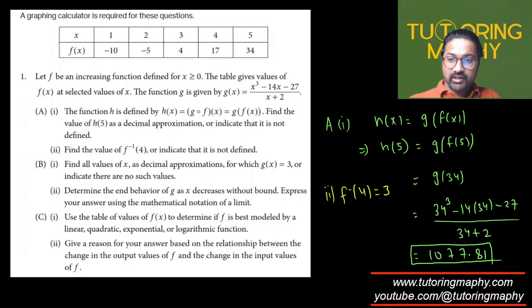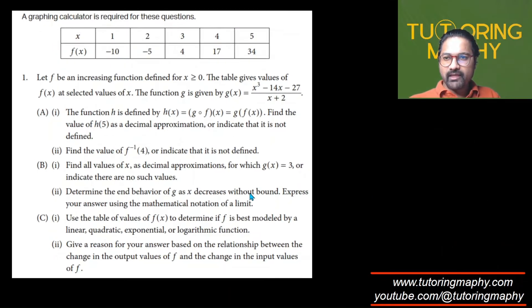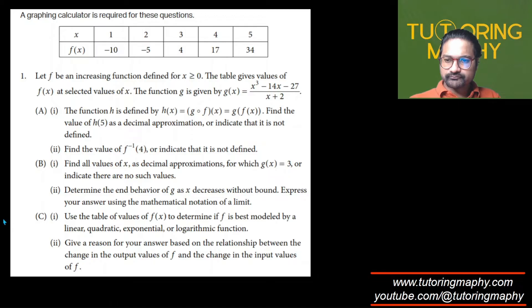Now find all values of x as decimal approximations for which G(x) equals 3, or indicate there is no such value. We need to work on this equation. G(x) equals 3, so we plug in the equation of G(x) and solve for G(x) equals 3.